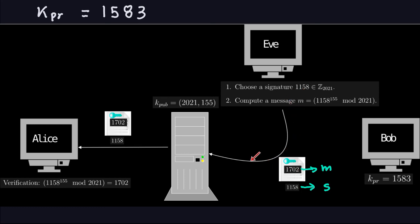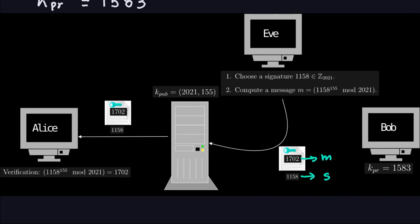Eve sends that pair through the insecure channel, and Alice receives message 1702 and signature 1158. Alice checks whether the signature is valid by computing S^E mod N = 1158^155 mod 2021, and of course she gets 1702, because that's how the message was computed. Alice says the signature is valid — though this message may not make any sense to her, so she can discard it. But this is basically the existential forgery attack.